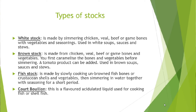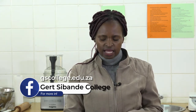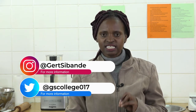The fish stock is made by slowly cooking unbrowned fish bones or crushed ocean shells with vegetables, simmering in water together with seasoning for a short period. The court bouillon is a flavoured acidulated liquid — we explained that acidulated liquid is water to which an acid is added, such as lemon juice or wine.